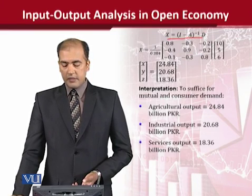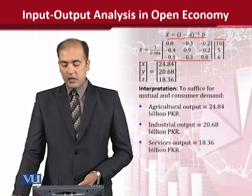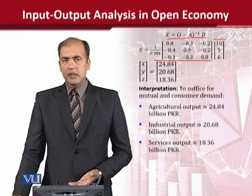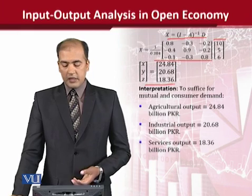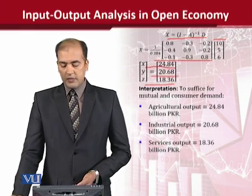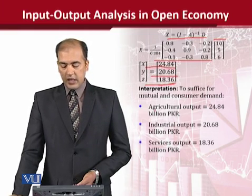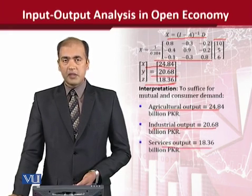Now we multiply the inverse (I − A)⁻¹ by the demand vector d using the standard matrix multiplication procedure. Here we have the inverse value and the value of d. After multiplying, we find the result which shows: x equals a certain value giving agricultural output, y's value giving industrial output, and z's value giving services output.